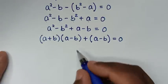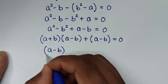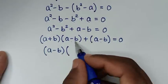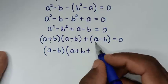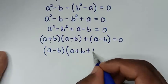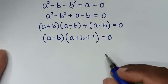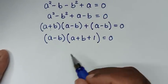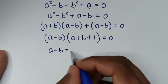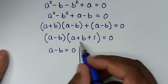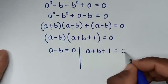Since (a minus b) is common, we factor it out: (a minus b)(a plus b plus 1) equals 0. This gives us two solutions — the first is a minus b equals 0, and the second is a plus b plus 1 equals 0.